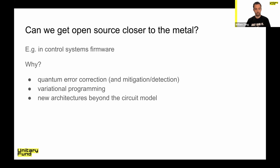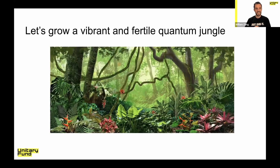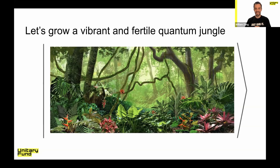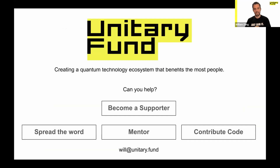Variational programs are already covered well. There are also really new architectures beyond the basic circuit model that are going to matter if you want to squeeze quantum advantage out — folks are mixing continuous variable systems with digital systems, mixing qudits with qubits in clever and interesting ways, and there's going to need to be software that controls all that. I'd like to entreat you to help grow a vibrant and fertile quantum jungle. If you'd like to help out with Unitary Fund, you can become a supporter, help spread the word, become a mentor, or help contribute code to the many open source projects that are out there. Thanks again for the time.